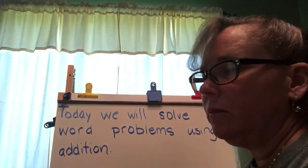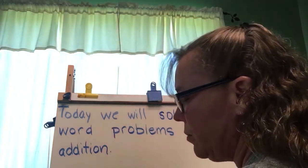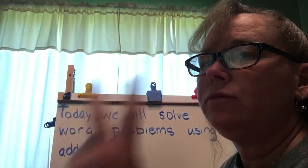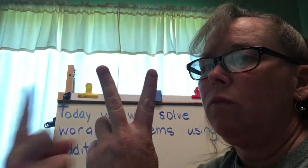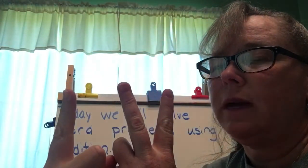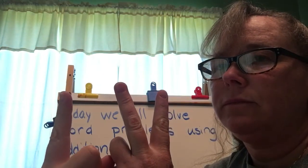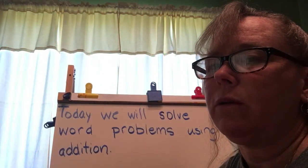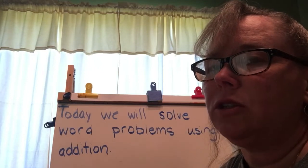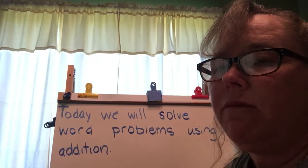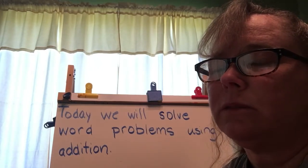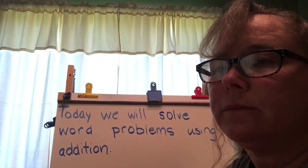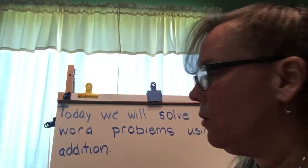We've done a little bit of addition, so let's warm up our minds real quick and do some quick finger addition. If I have two fingers and I add one more finger, how many fingers do I have? You are correct — we have three. Now I'm not going to show you any fingers; you're just going to do it in your head. If I have three plus one, how many do I have? Correct, I have four.